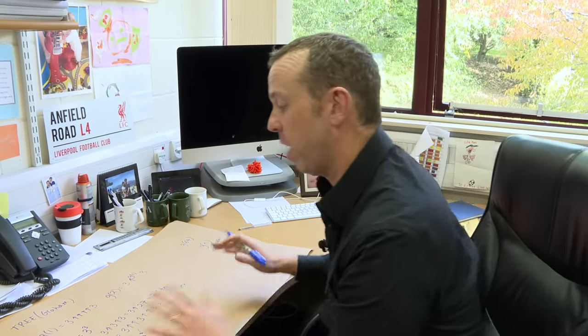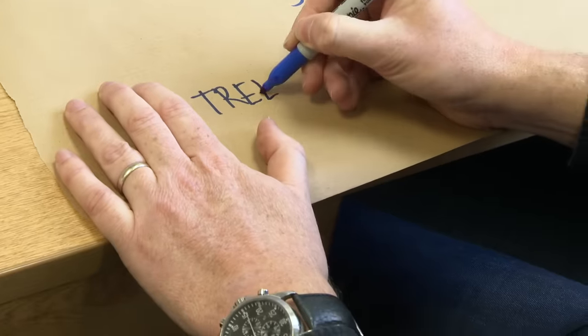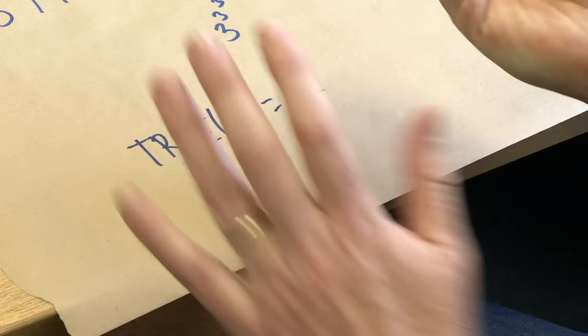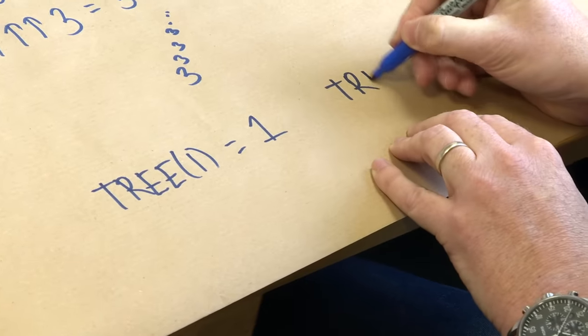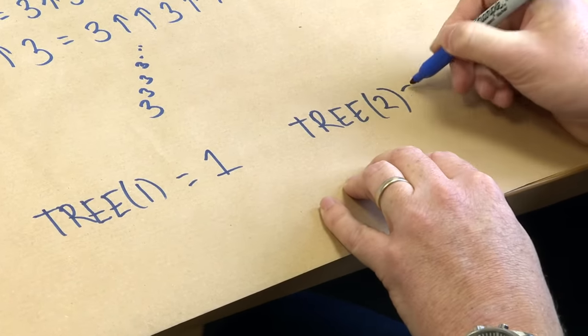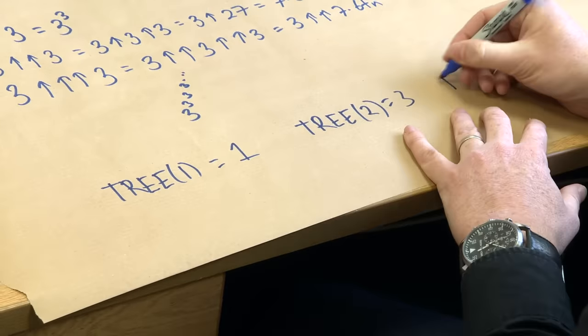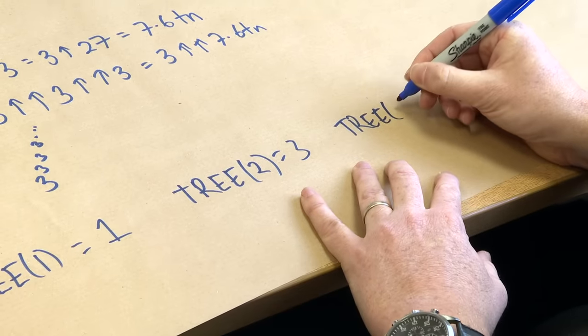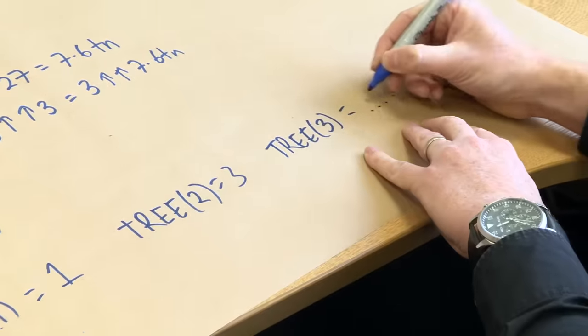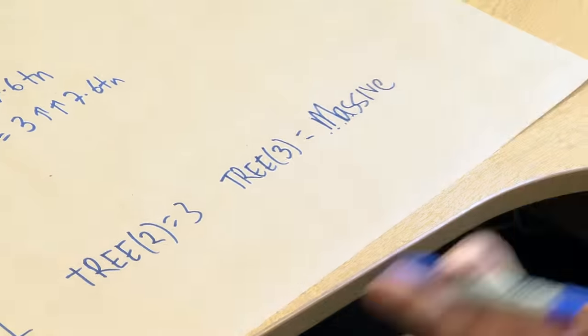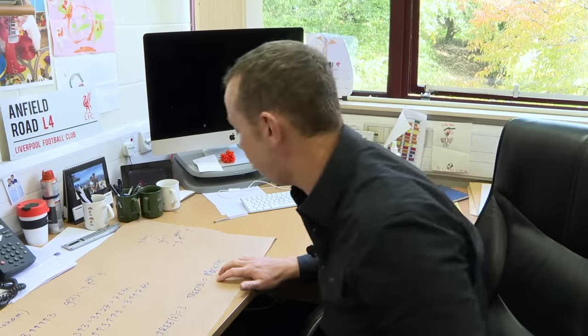Trees also gave us a sequence. The tree game is played with a finite number of different types of seeds and you try to grow trees — the question is how long can the game go on? With one type of seed, the game lasts a maximum of one go, so Tree(1) = 1. Tree(2), with two different seeds, is 3. But with three different seeds, the game can potentially go on for absolutely ages. This number is massive — it's actually bigger than Graham's number — a truly, truly gargantuan number.